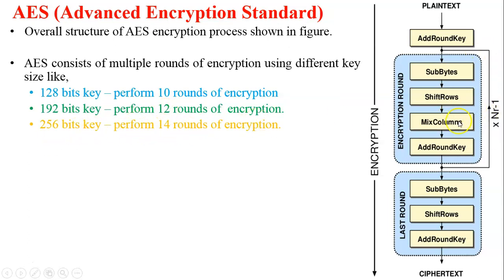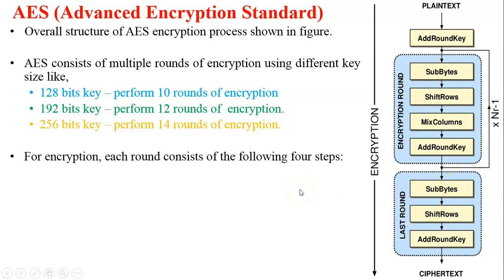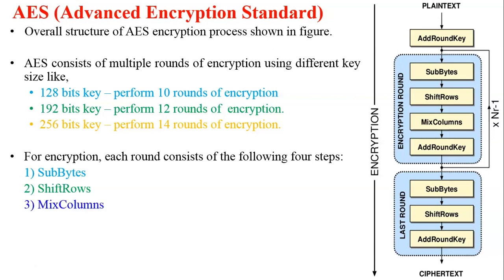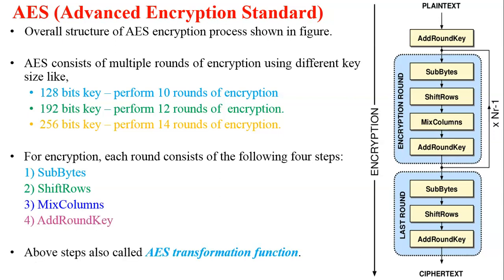In the figure you can see the plain text, Add Round Key, and different rounds of encryption, and this is the last round of encryption. For each encryption round, there are four steps. First is Substitution Bytes, where bytes or given numbers are replaced with other numbers or letters using the S-Box. During decryption you must use the inverse S-Box. Second is Shift Rows, also called permutation or transposition. Third is Mix Columns. Fourth is Add Round Keys. These four steps are called the AES transformation function.